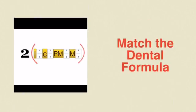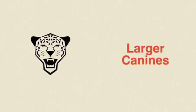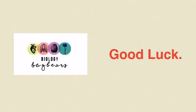You could be asked to match the dental formula of a particular animal to a photograph. Rabbits have very large incisors and no canines. Carnivores such as this tiger would have larger canines, and usually a larger one on the bottom. That was a short video on the dental formula. This chapter ties in with human nutrition, so don't forget to revise that.